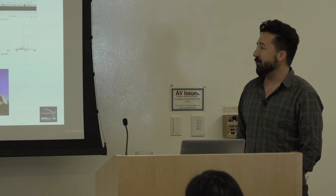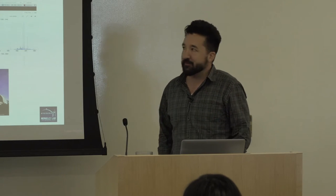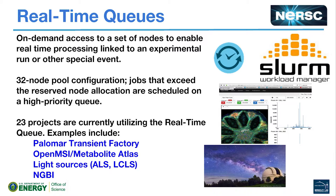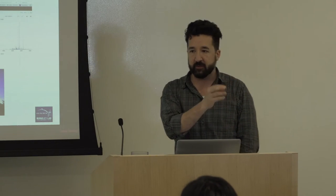A few things I wanted to touch on that we're not going to have time to cover today in a full talk. One of them is the real-time queue. With our flexible Slurm workload manager, we're able to configure special queues for different use cases. The real-time queue is probably of interest to people running experiments remotely — it's on-demand access to a pool of nodes that can respond basically immediately when you want to run a job. You have to apply to get into it, and it's mainly for experiments that are running at the same time as they need compute, but don't have compute resources on site — so it's shipping data over, doing something with it, and shipping the answer back.